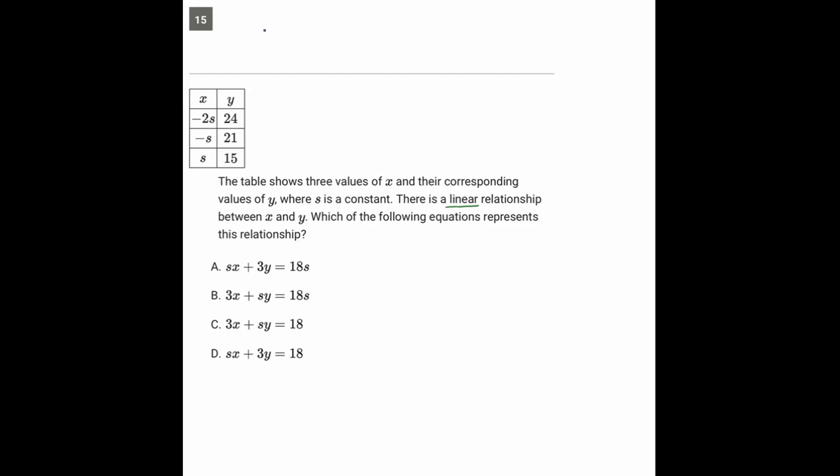So we'll start here by getting the slope. Slope is y2 minus y1 over x2 minus x1. So let's say 21 minus 24 over negative s minus negative 2s. That's negative 3 over negative s plus 2s, which gives you negative 3 over s. Negative 1 plus 2 is just 1, and one single negative sign makes the whole thing negative. Negative 3 over s.